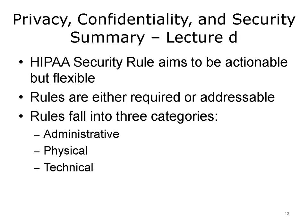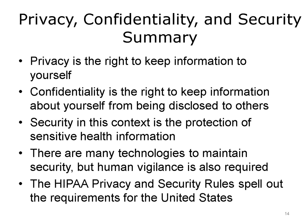This concludes Lecture D of Privacy and Security. In summary, the HIPAA Security Rule aims to be actionable but flexible. Its rules are either required or addressable, and they fall into three categories: administrative, physical, and technical. This also concludes Privacy, Confidentiality, and Security. In summary, the major aspects of privacy, confidentiality, and security of health information were reviewed, and the HIPAA privacy and security rules were explored. Privacy is the right to keep information to ourselves, whereas confidentiality is the right to keep information about ourselves from being disclosed to others. Security, in this context, is the protection of sensitive health information. There are many technologies to maintain security, but human vigilance is also required. Finally, the HIPAA Privacy and Security Rules spell out the requirements for health care organizations and those with whom they do business in the United States.